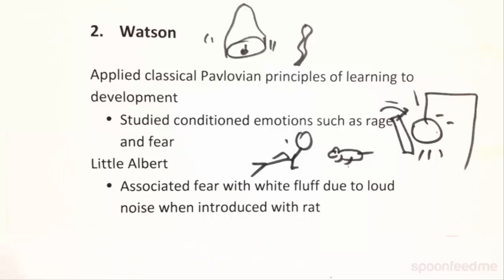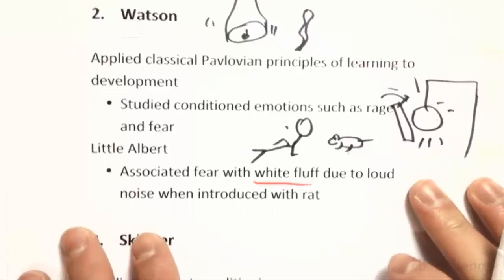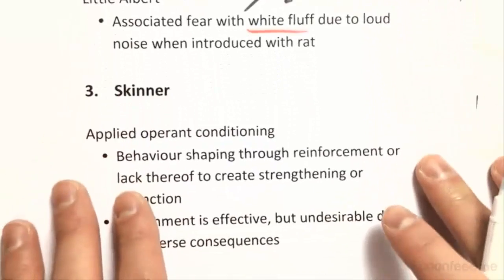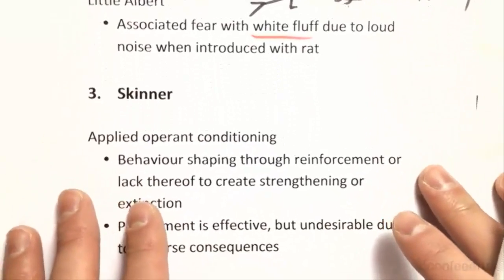Not only did Albert associate fear with the rat, he associated the fear with anything similar to the rat in any way — if it was white, if it was fluffy. This shows that we have these external learning mechanisms when we develop.